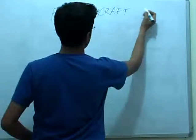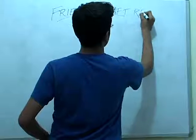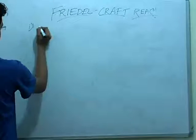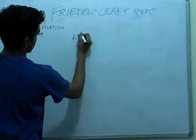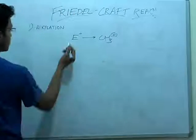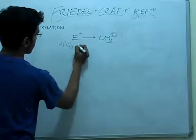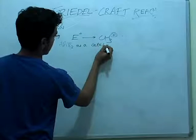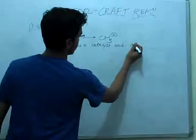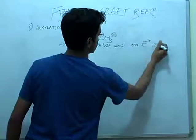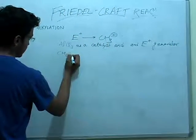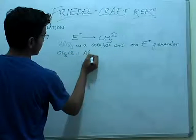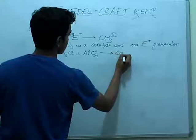We are studying the set of reactions which includes alkylation and acylation. Here, first of all we will study alkylation. The electrophile E+ is generated using AlCl3 as a catalyst. For this, we take an alkyl halide — for example, CH3Cl — and react it with AlCl3.